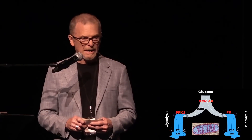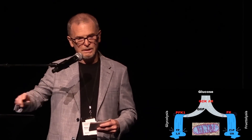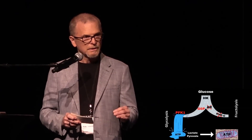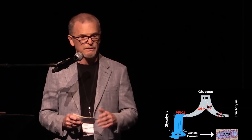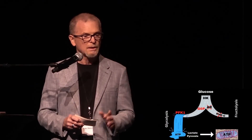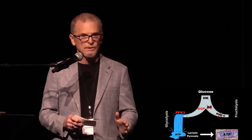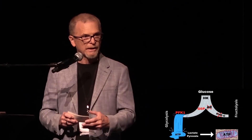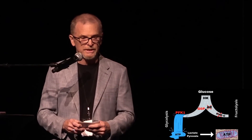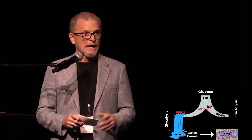Under low intracellular glucose concentrations — defined here at 5 millimolar, about 90 mg/dL — hexokinase catalyzes the efficient conversion to low levels of glucose-6-phosphate. We then hit the trapdoor PFK1 with 100% commitment to glycolysis, producing the glycolytic substrates lactate and pyruvate, which can enter the mitochondria and be burned to produce ATP. I characterize this as the burning state.